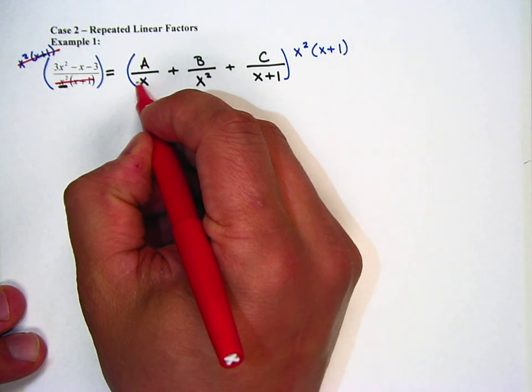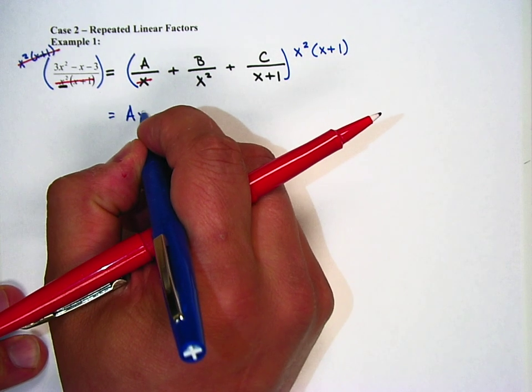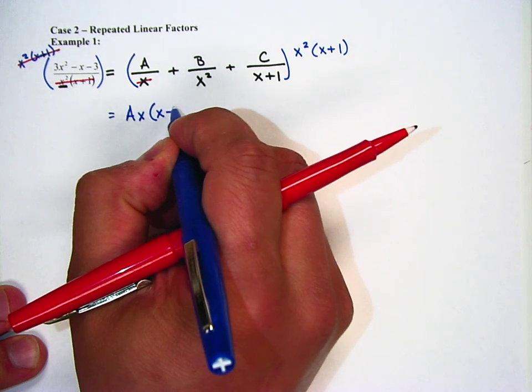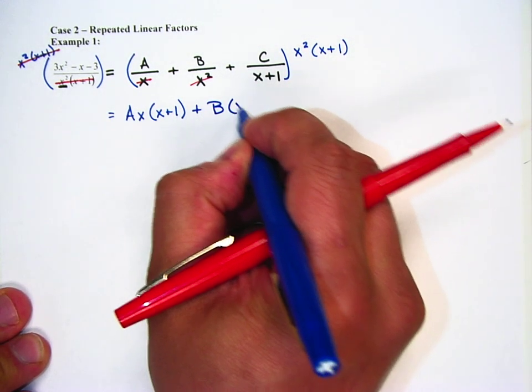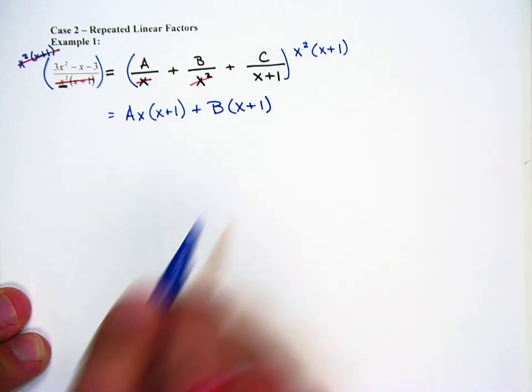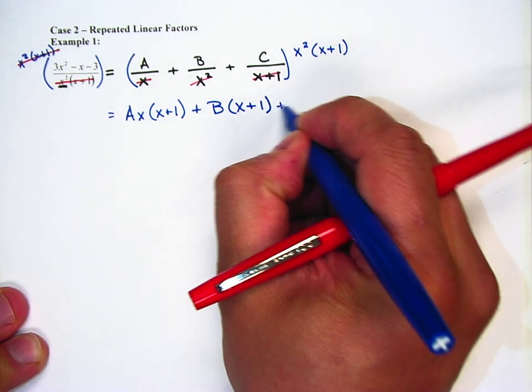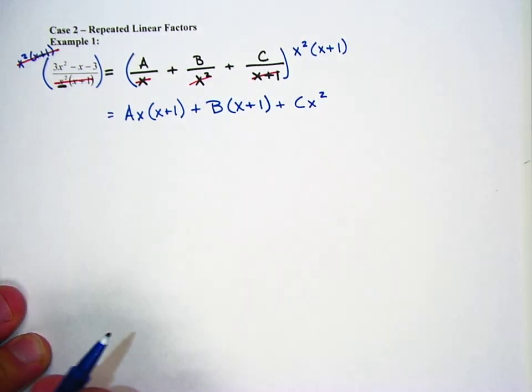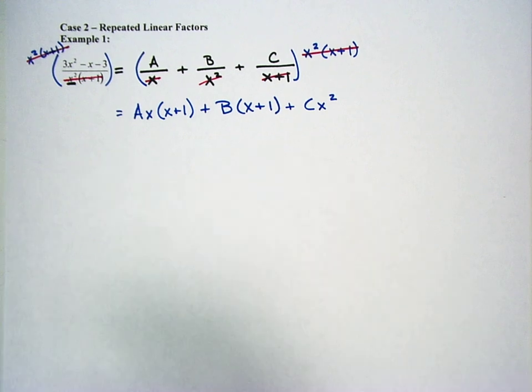On the right side, this x will cancel with one of the x's, and so I'll actually have A times x times x plus 1. This x squared will cancel with this entire x squared, leaving us with B times x plus 1. And then this x plus 1 would cancel with this x plus 1, giving us C x squared. So now my entire right side denominators are canceled out, and what's going to happen now is I'm just going to distribute and simplify and group things together just like we have before.